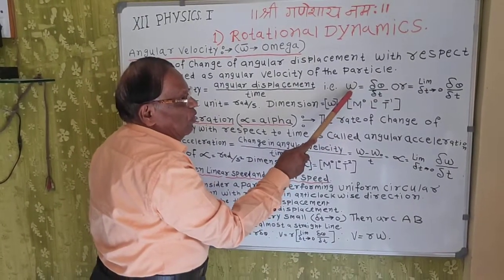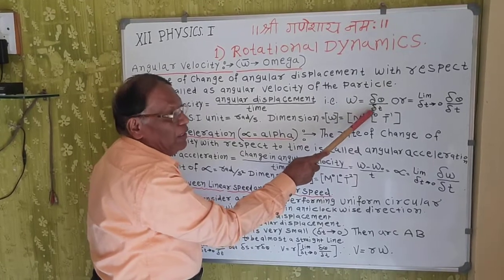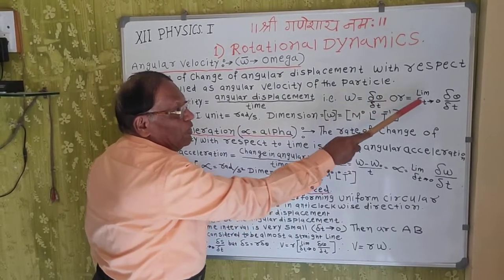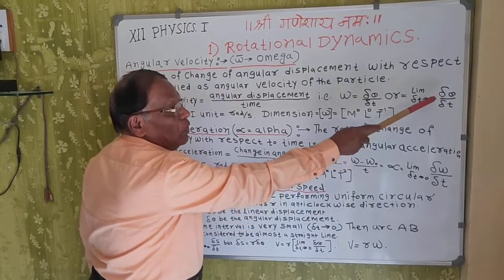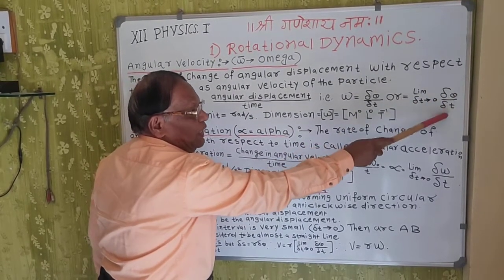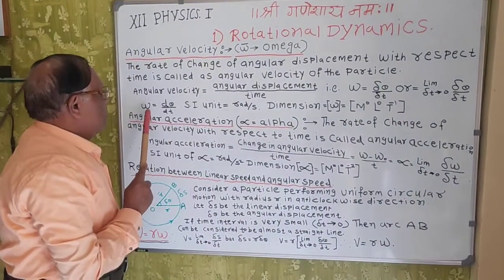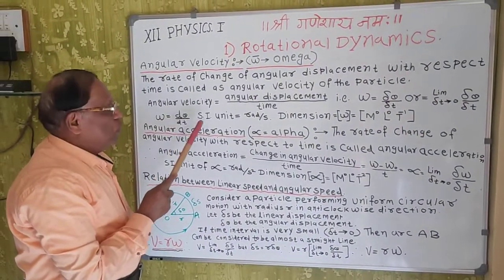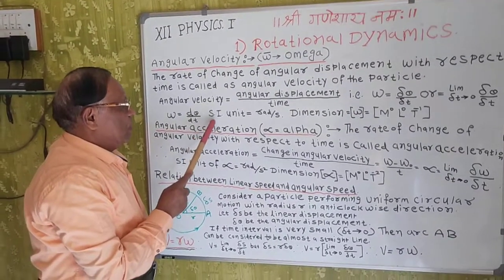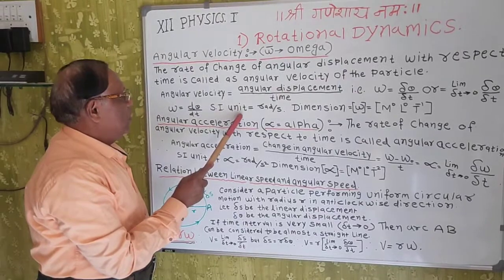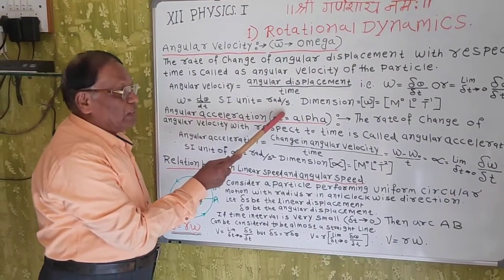Therefore, omega is equal to delta theta upon delta t, or in the limit as delta t tends to 0, delta theta by delta t. So omega is equal to d theta upon dt. The SI unit of angular velocity is radian per second.